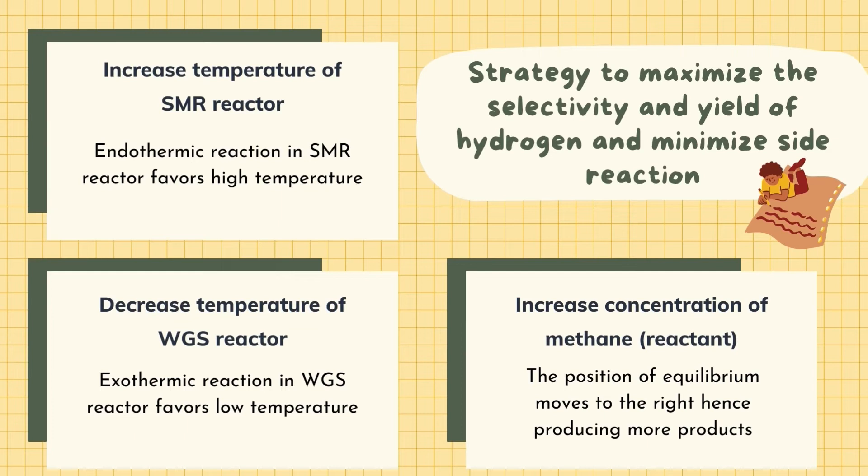For the strategy to maximize selectivity and yield of hydrogen, we use three strategies. One is to increase temperature of SMR reactor as forward reaction favours high temperature, resulting in more yield of hydrogen produced. Second, is to decrease temperature of WGS reactor. In WGS, the exothermic reaction favours low temperature, thus causing the yield of hydrogen to increase. The last strategy is to increase concentration of pure methane as this will favour more forward reaction in SMR reactor producing more hydrogen.